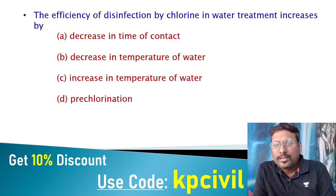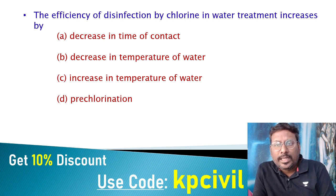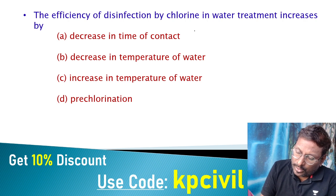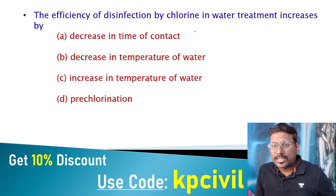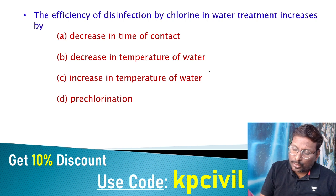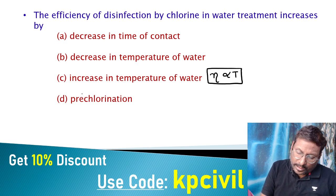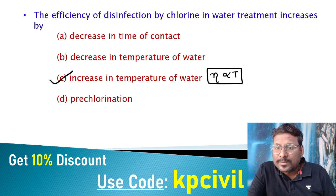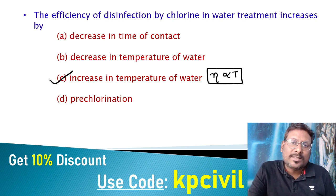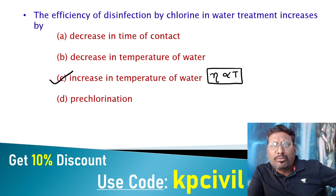Efficiency of disinfection by chlorine in water treatment increases with time of contact — they are directly proportional. More time of contact means more efficiency. Temperature and efficiency are also directly proportional: increase in temperature increases efficiency. Disinfection is a chemical reaction between chlorine and water (formation of HOCl and OCl⁻) and then contact with bacteria. Rate of chemical reaction increases with increase in temperature.